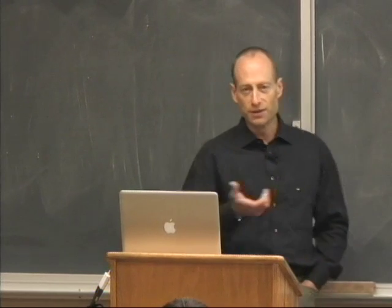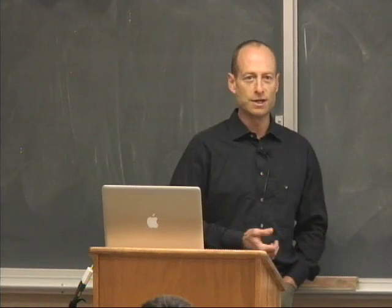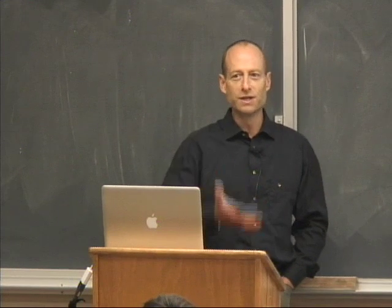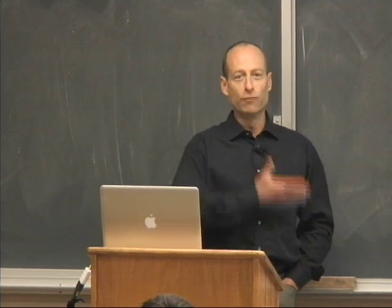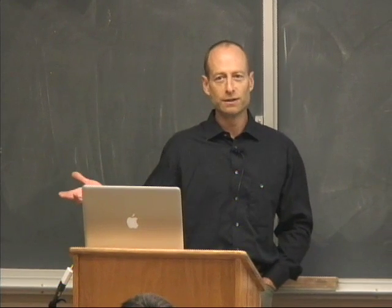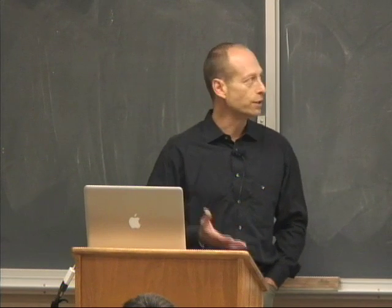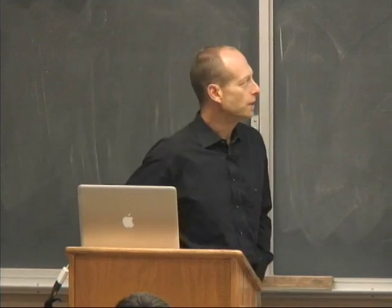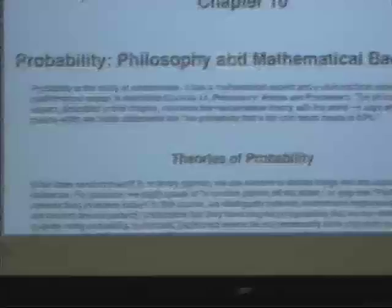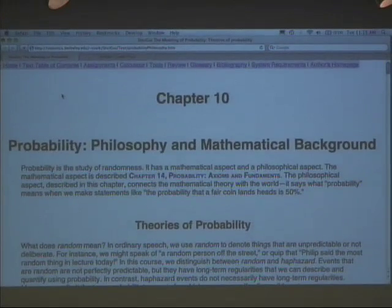When I say that the chance a fair coin lands heads is 50%, what does that mean? If we take it as a given that the chance is 50%, I can do all kinds of math with that. But what does it mean about the coin, about the world? We're going to talk about this philosophical glue that connects the mathematical theory of probability with stuff you can see in the world — how do you interpret it?